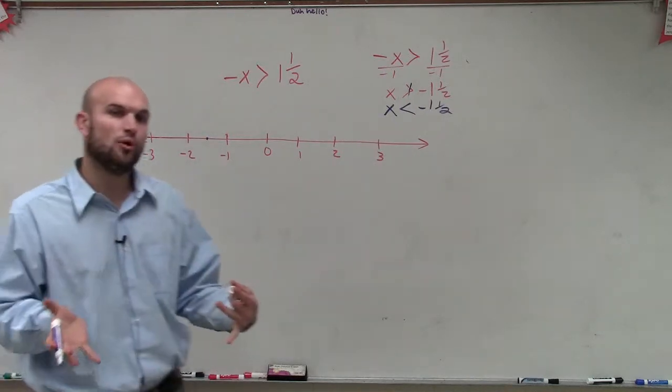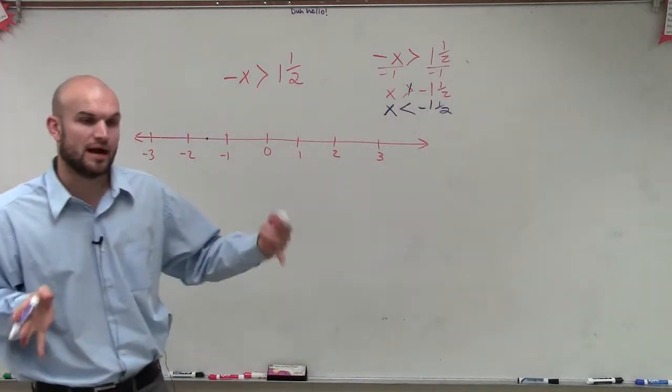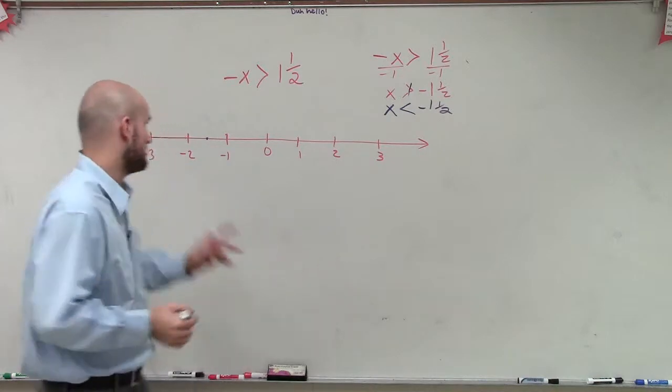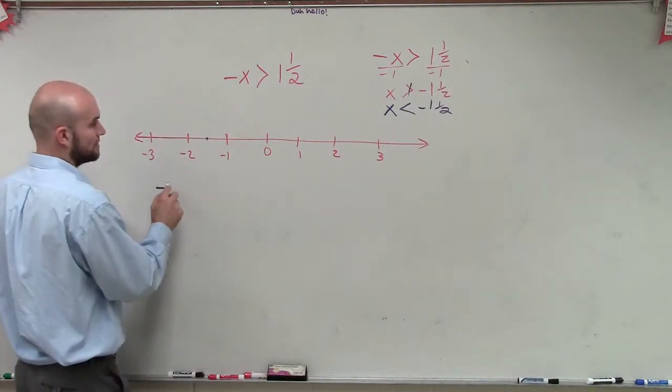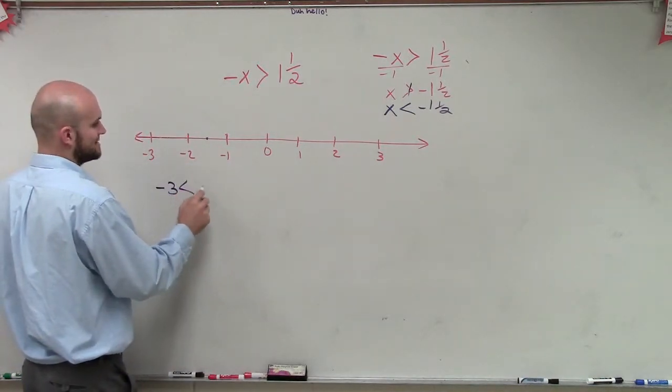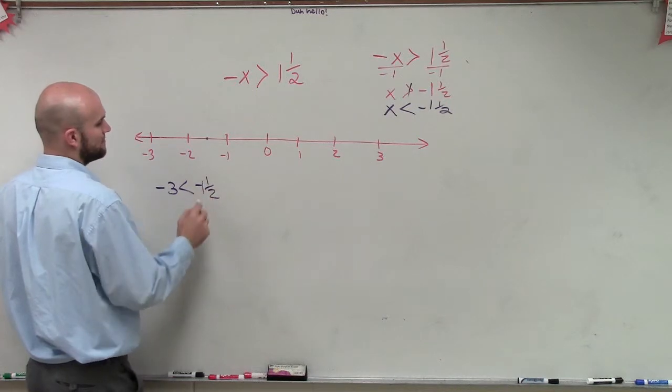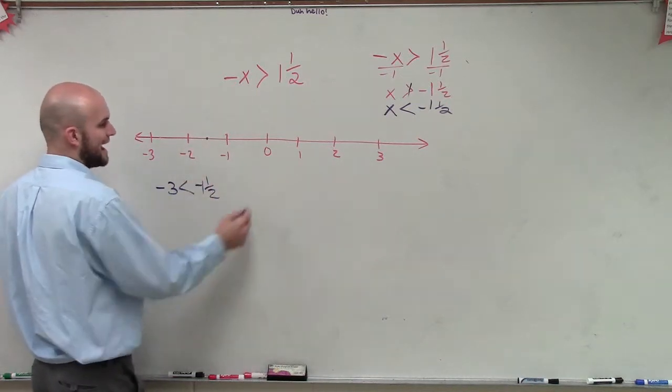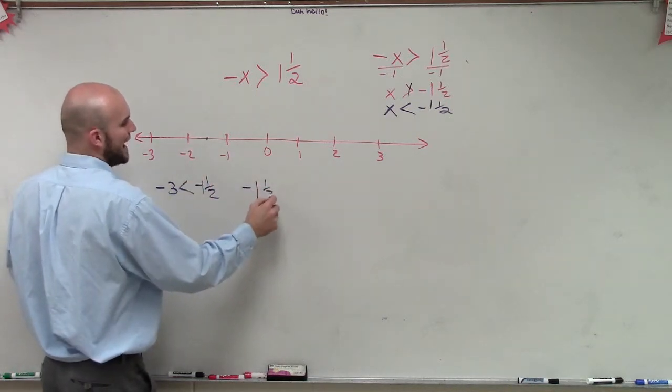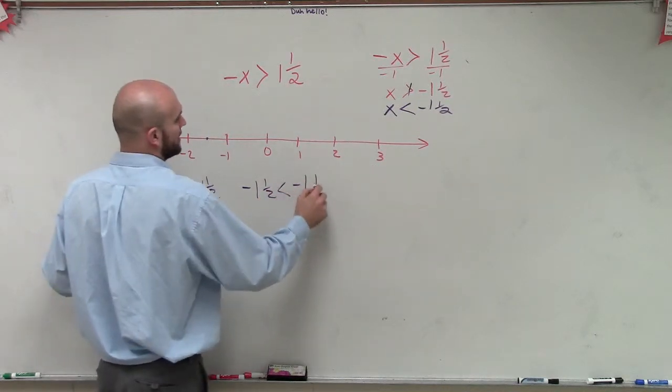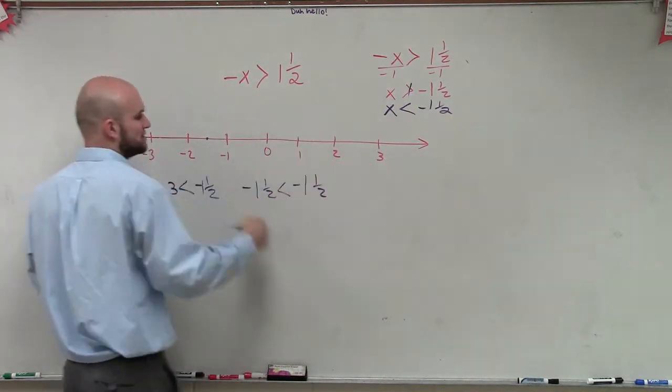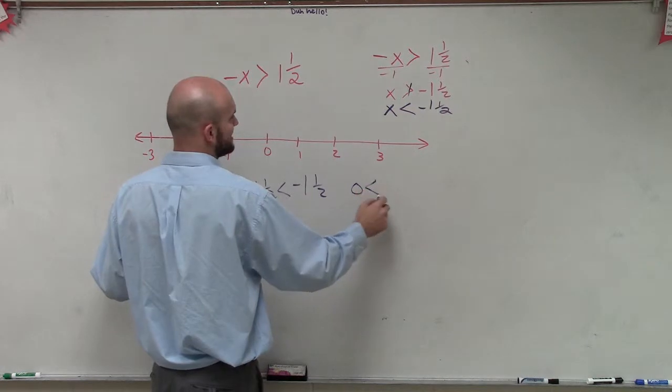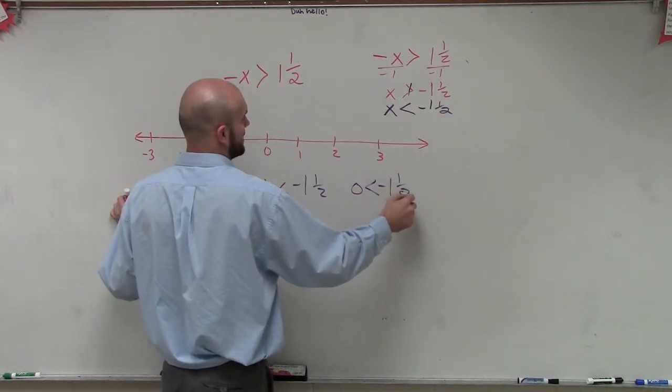What I like to do is once I pick my point, I want to pick three test points. I want to pick a test point to the left, so negative 3 is less than negative 1 and 1 half. I want to pick a test point right at it, so negative 1 and 1 half is less than negative 1 and 1 half. And I want to pick a point to the right, which would be 0 is less than negative 1 and 1 half.